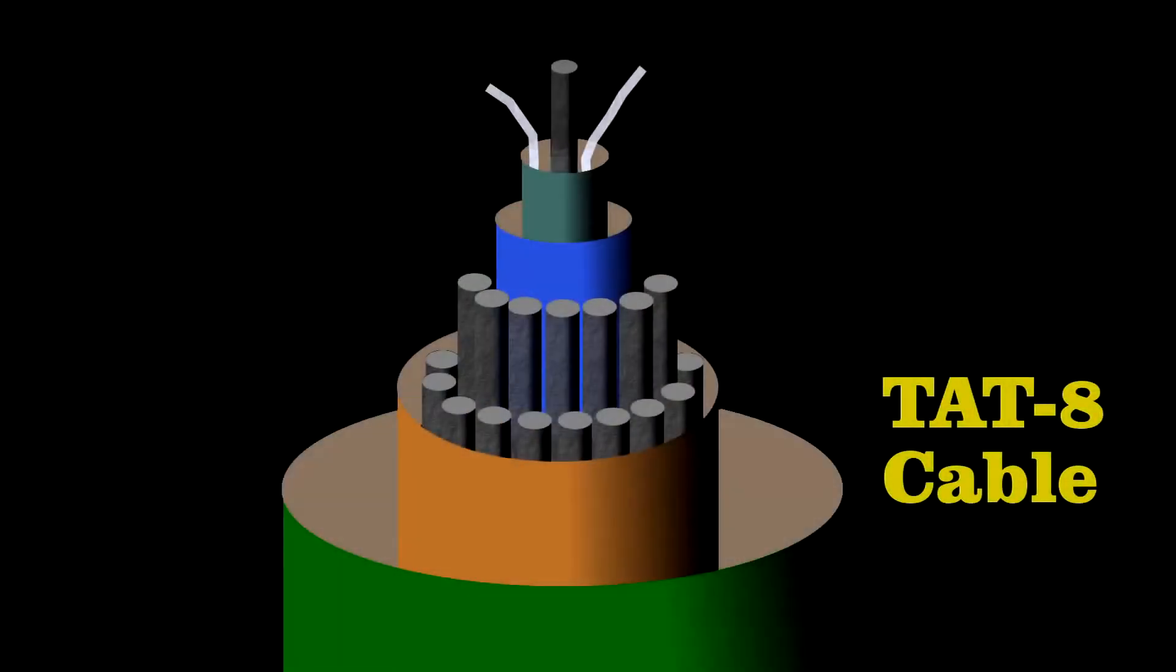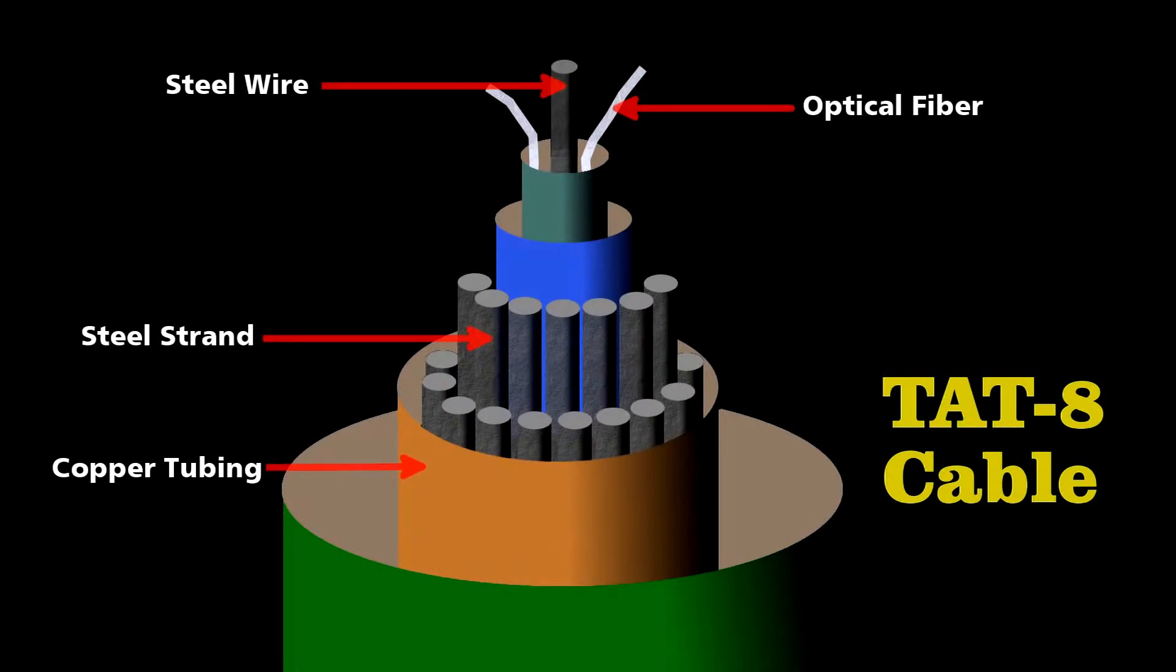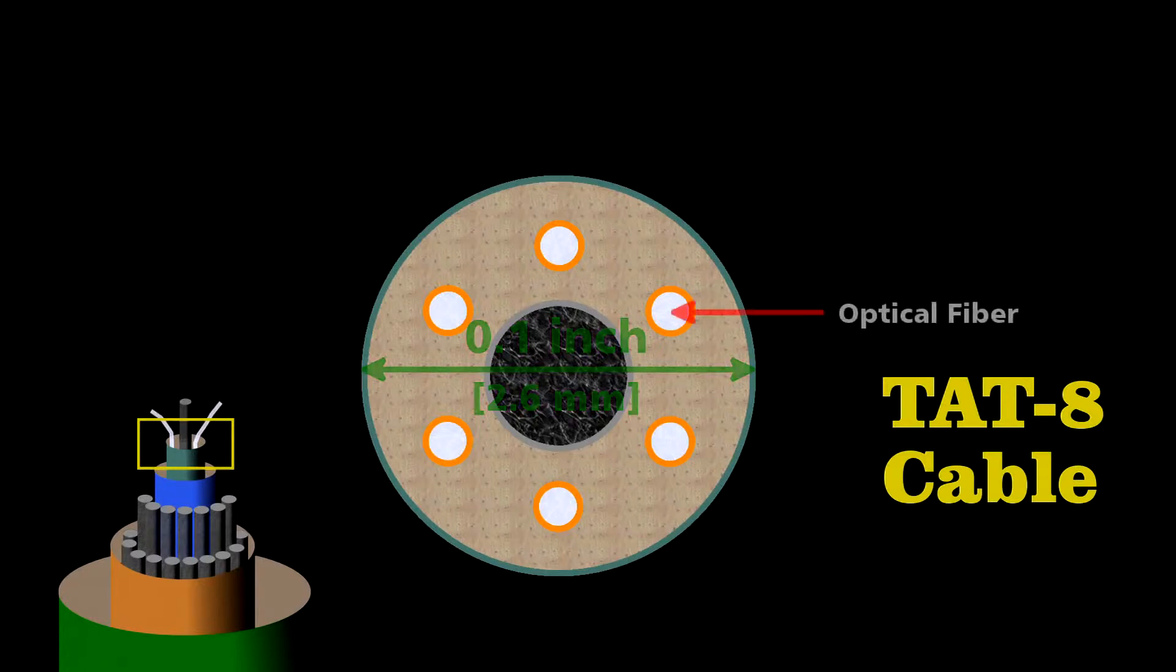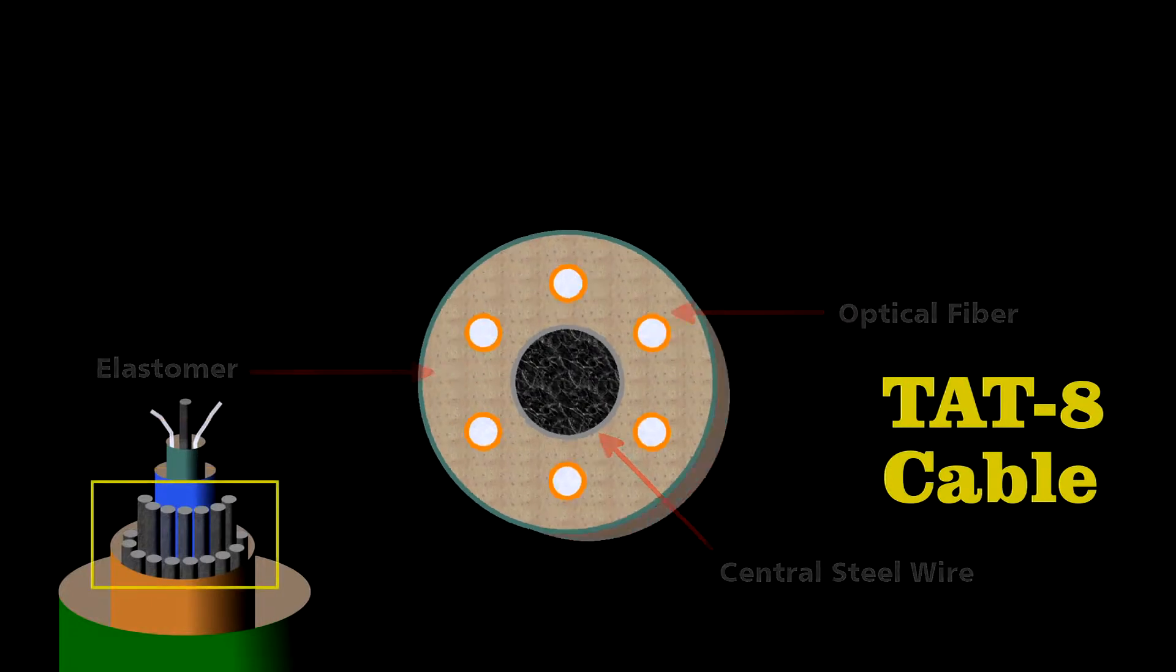Engineers designed the cable carefully to survive on the ocean floor. At its center lies the core. Less than a tenth of an inch in diameter, it contains six optical fibers wrapped around a central steel wire. They embedded this in an elastomer to cushion the fibers,